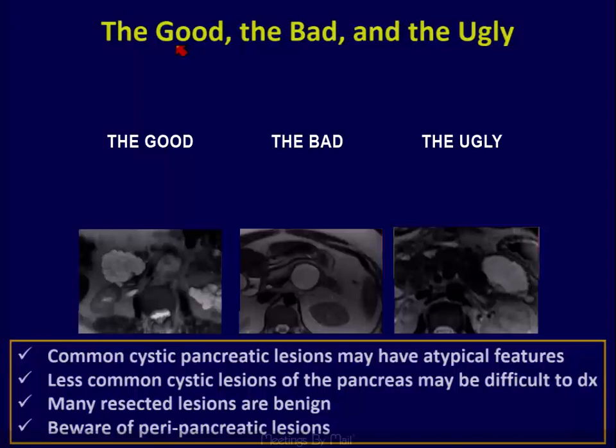The good, the bad, and the ugly: the good is the serocyst; the bad is a mucin-containing cyst; and the ugly — hopefully it won't kill the patient — but maybe hemorrhagic, with layering, maybe with debris — is the pseudocyst.